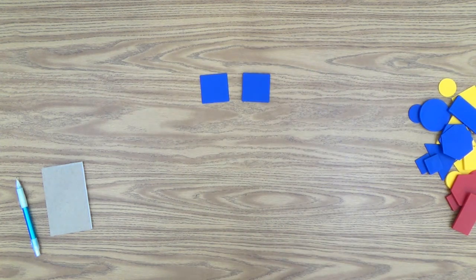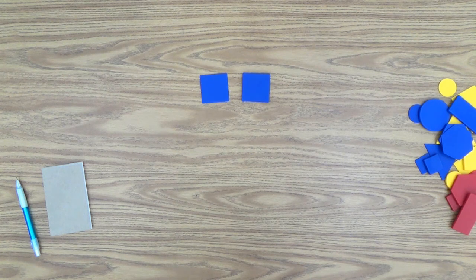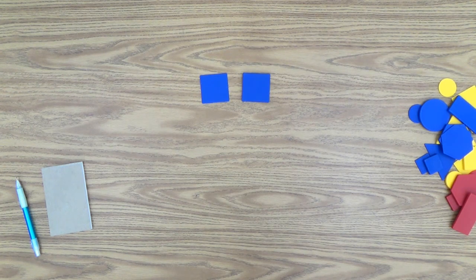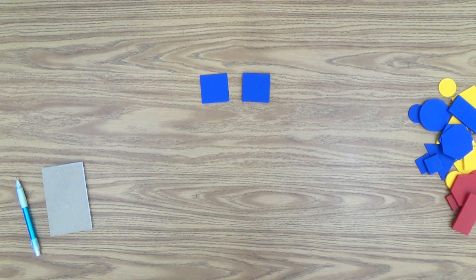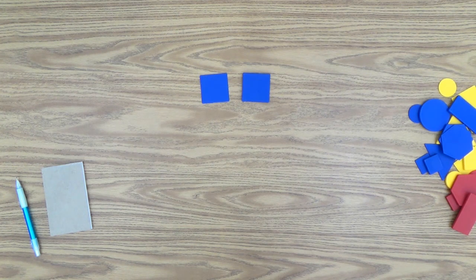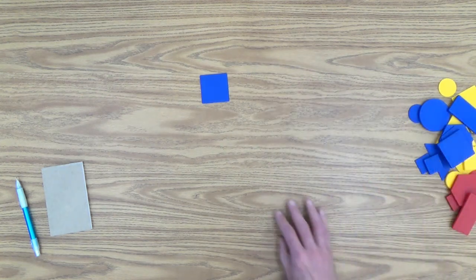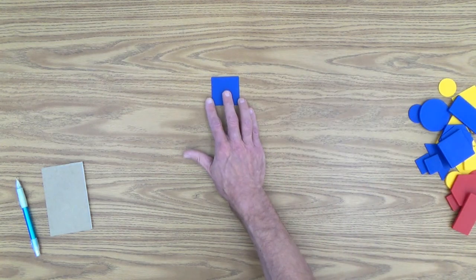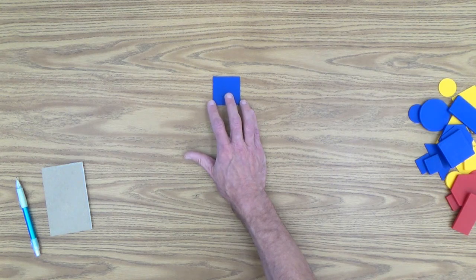So they're going to ask, they could ask one of two questions. A child might ask, is your block thick? And you could say, no, my block is not thick. And look, by process of elimination, they finally arrived at the block you were thinking of.